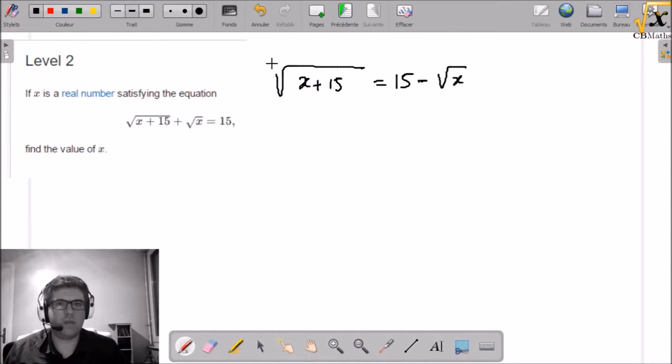Square root of x plus 15, square. Square root of x plus 15, square. Equals square of 15 minus square root of x. Square root of x, square.